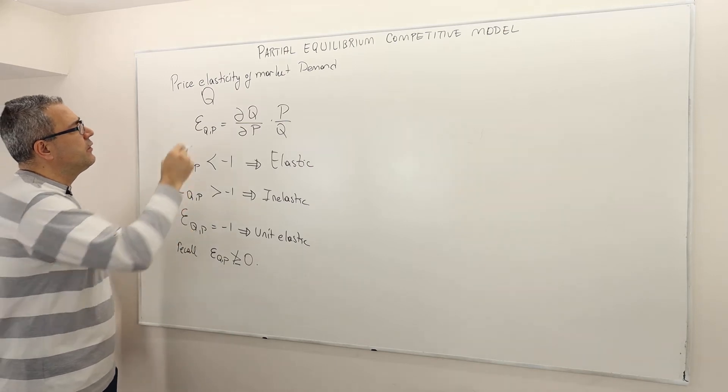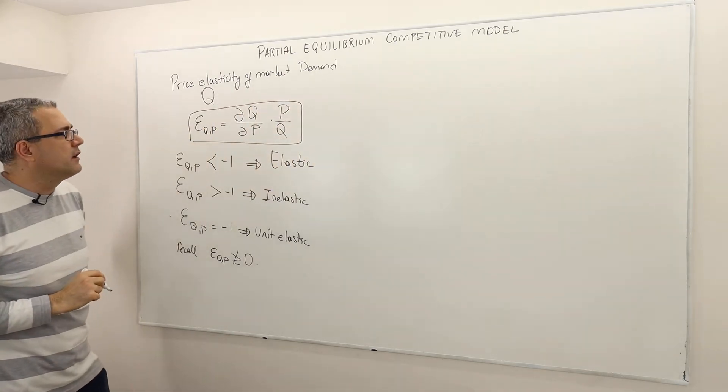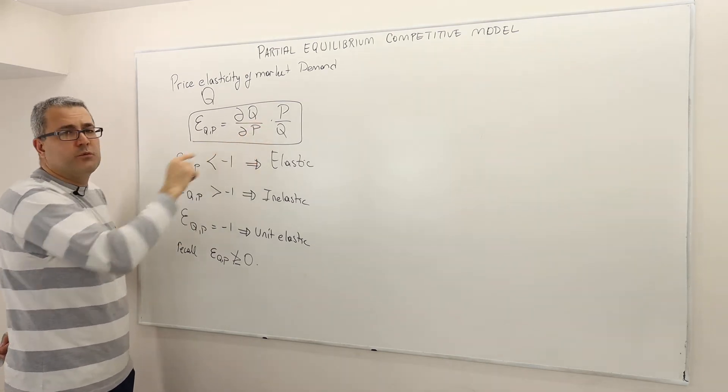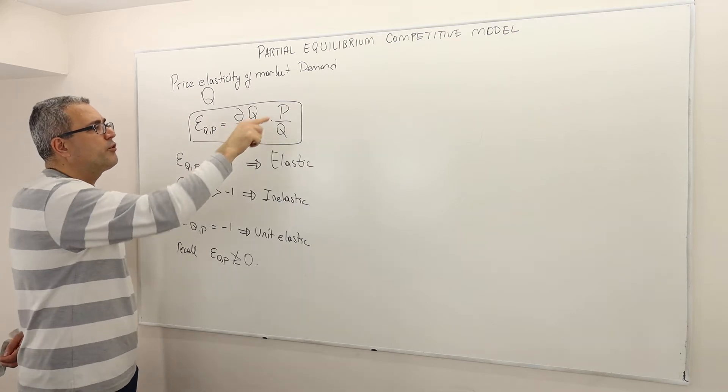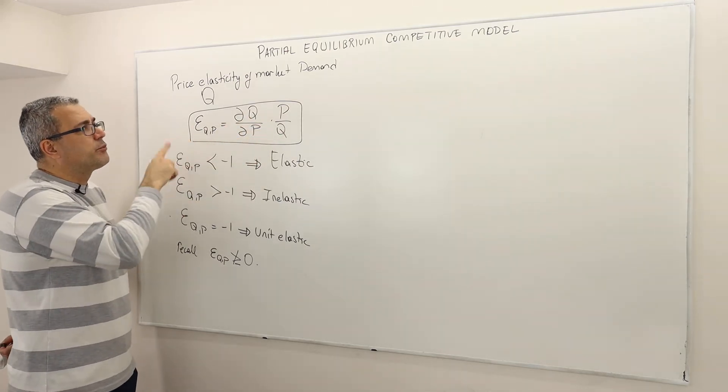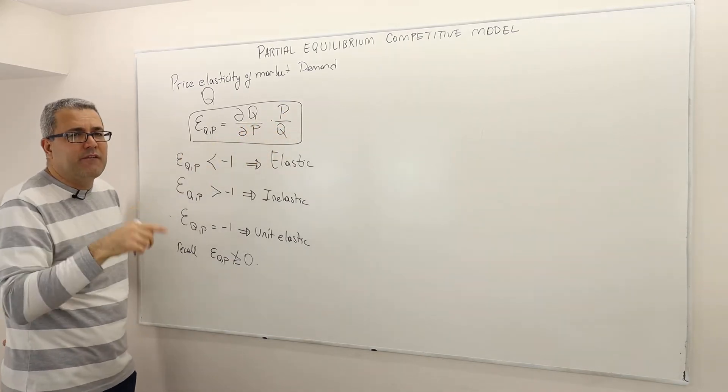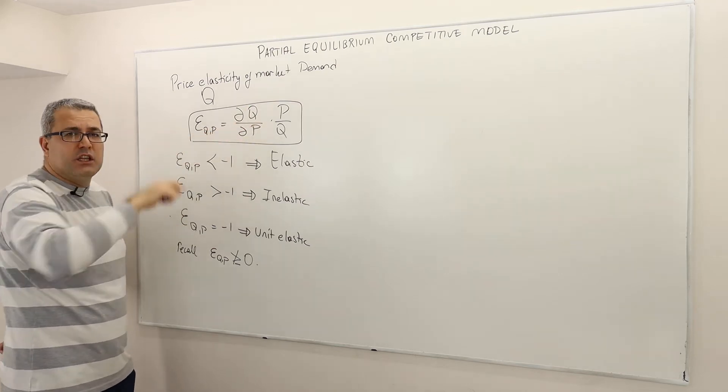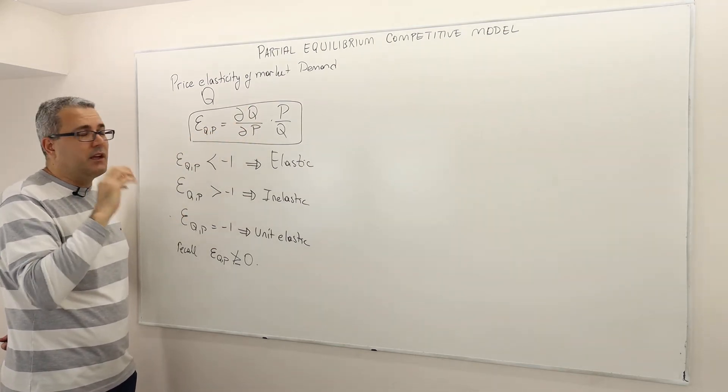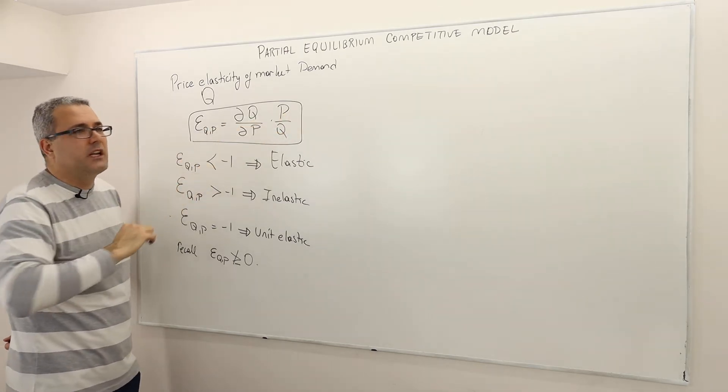So the price elasticity of market demand is basically described by this mathematical notion. It's the partial derivative of the demand curve with respect to the price multiplied by price quantity ratio. So the price elasticity of demand depends on the price and quantity level you pick and obviously the slope of the demand curve at the picked or selected price and quantity level.